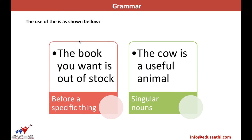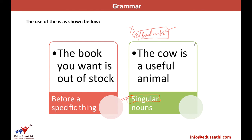For example, 'the book you want is out of stock' means you want a particular book, whereas 'a book you want is out of stock' could be any general book. If I say 'the cow is a useful animal,' this means you are talking about the cow specifically, not any domestic animal. Articles are always used in front of singulars and not plurals. We can never say 'a students' — since 'students' is plural, we cannot use any article. But we write 'a student' because 'student' is a singular noun.